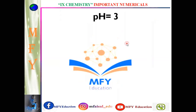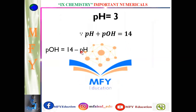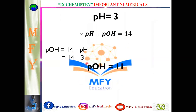और अगर हम formula apply करें — pH + pOH = 14 — तो यहाँ पर pOH = 14 − pH = 14 − 3 = 11। तो pOH कितना — 11। तो हमने numerical number 1 complete कर लिया।